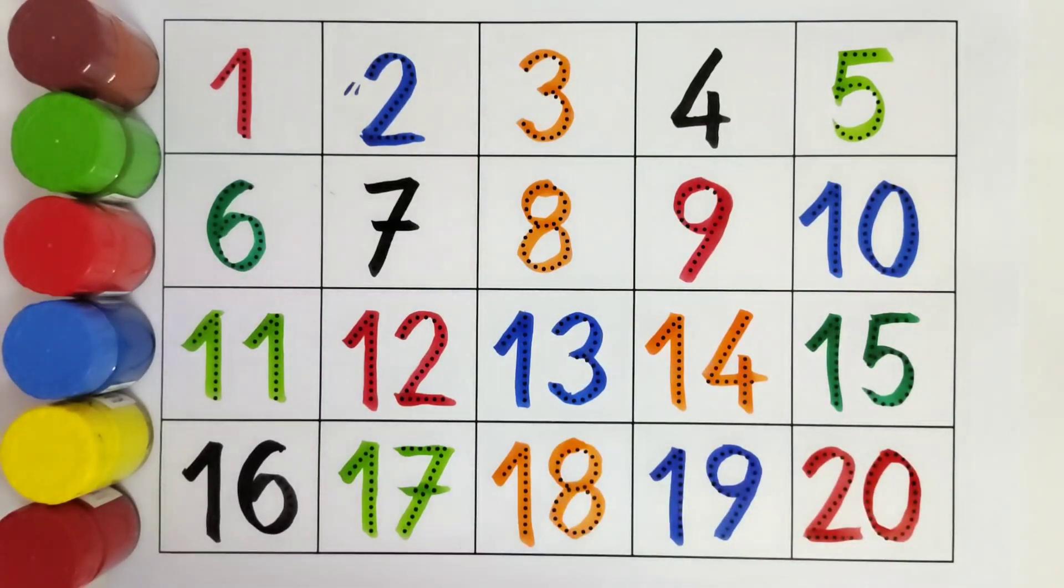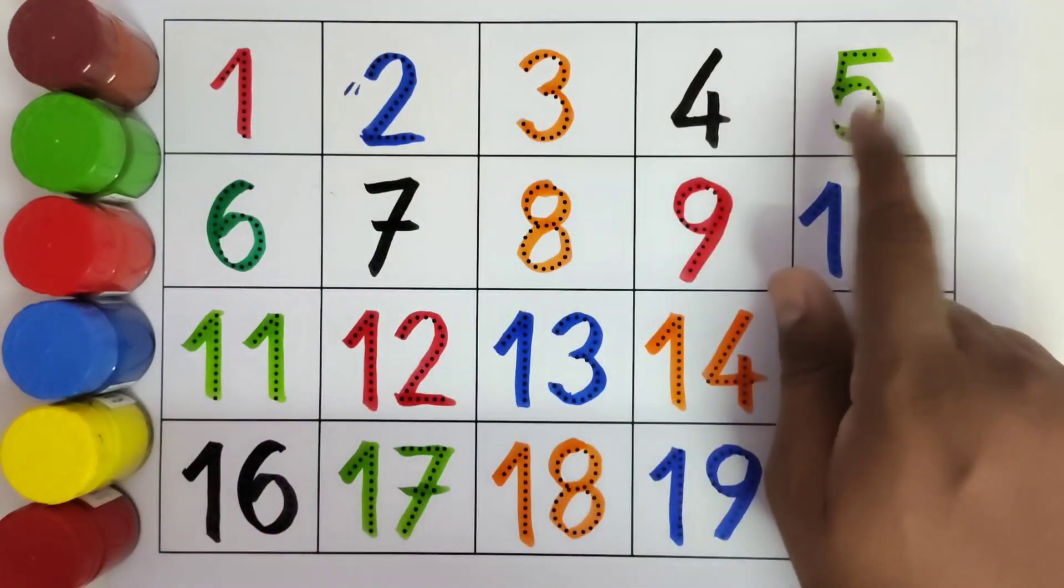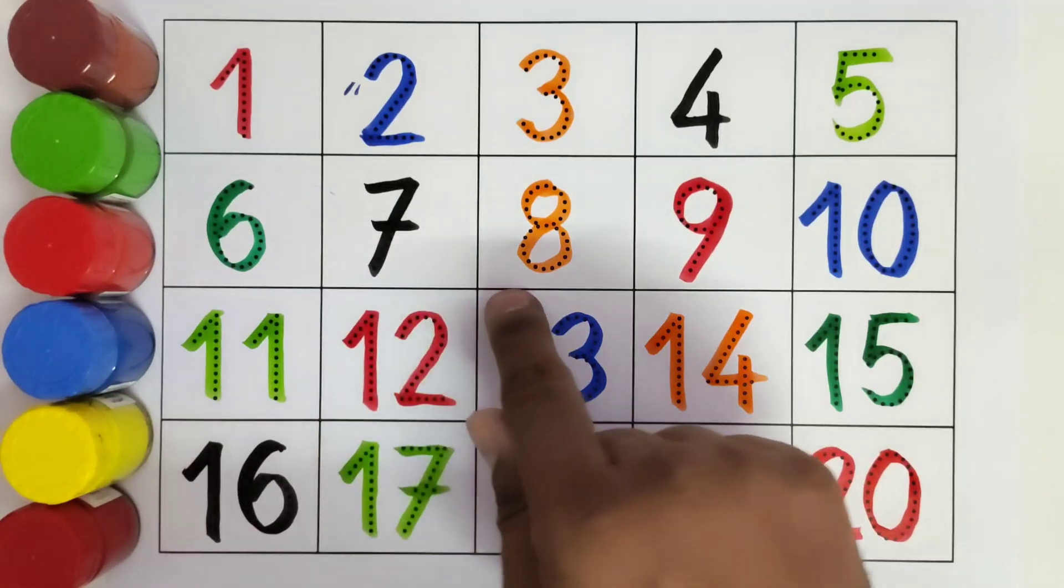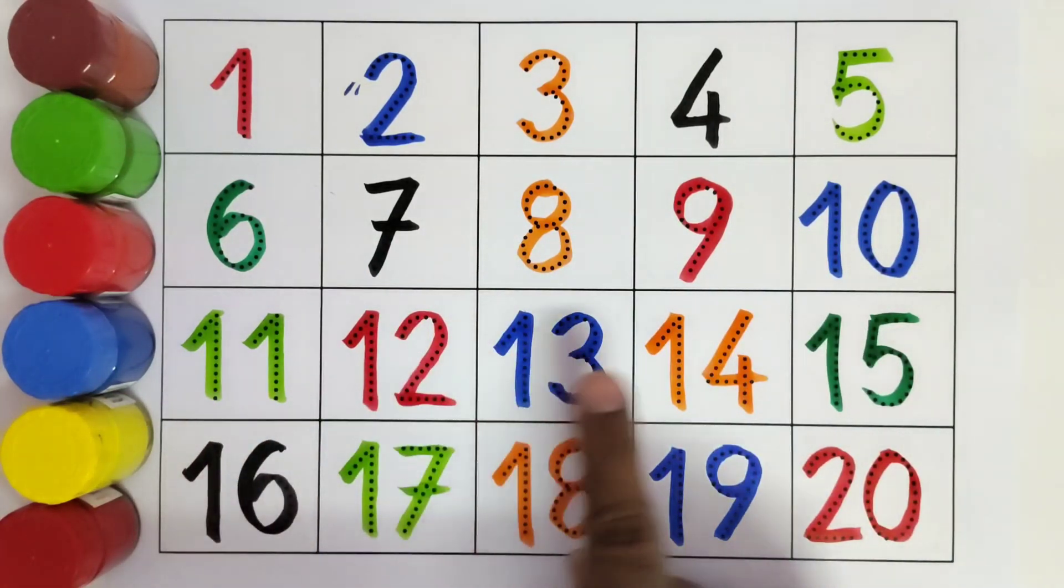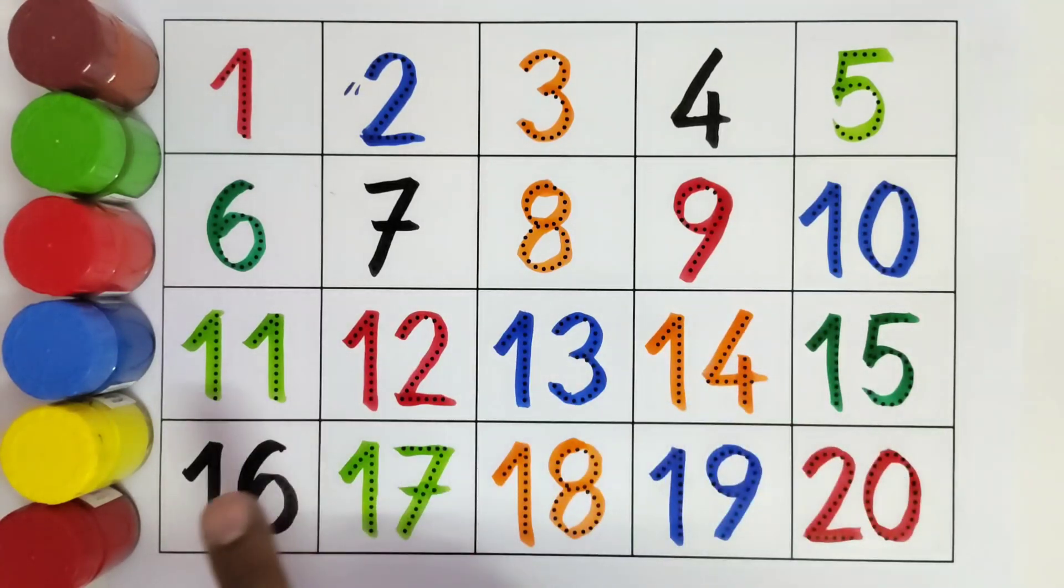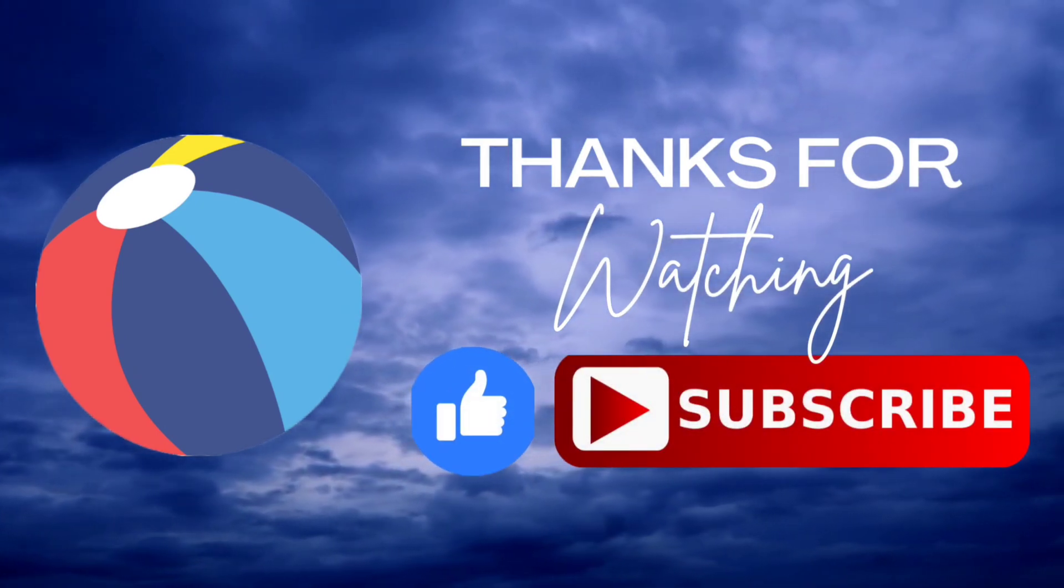We will read it one by one. 1, 2, 3, 4, 5, 6, 7, 8, 9, 10, 11, 12, 13, 14, 15, 16, 17, 18, 19, 20. Thank you kids for coloring these numbers with me. I hope you like it. Do like and subscribe. Bye-bye.